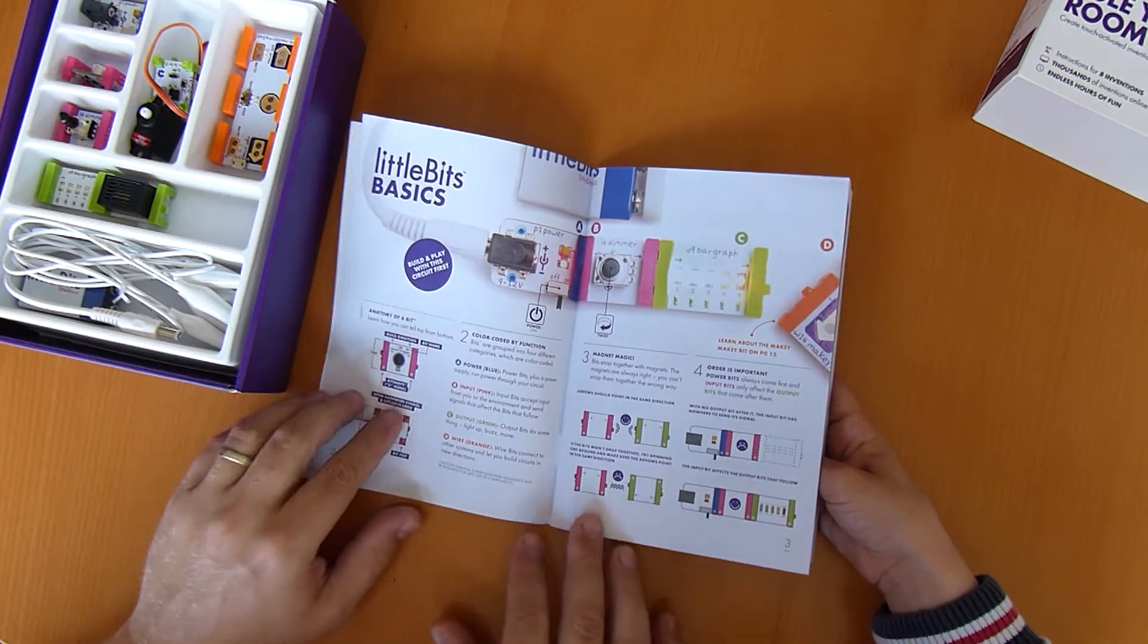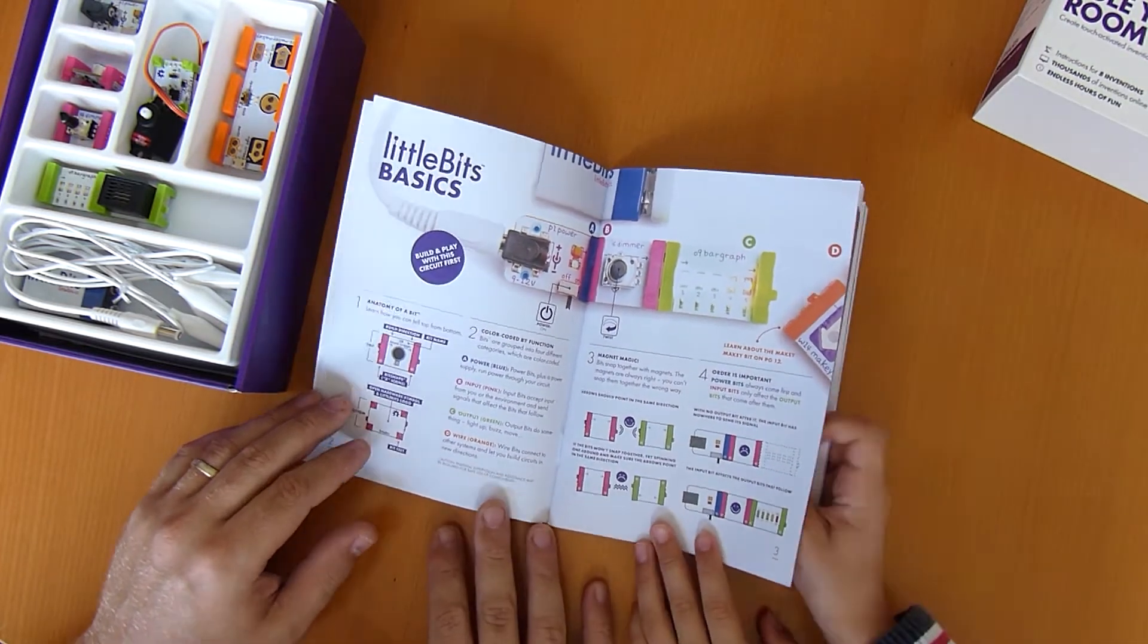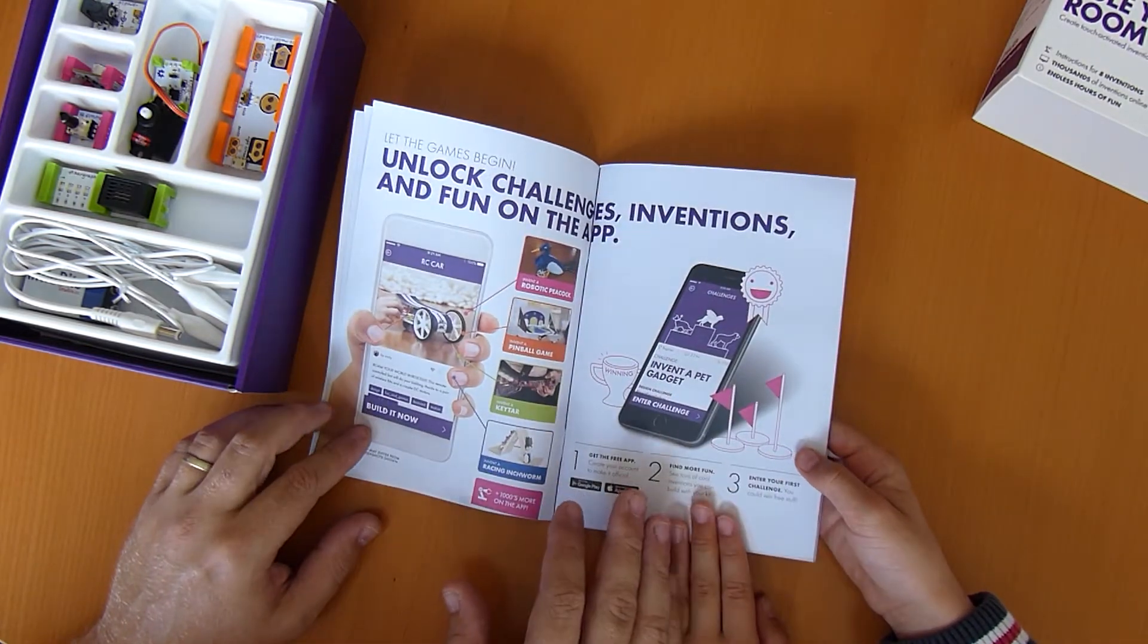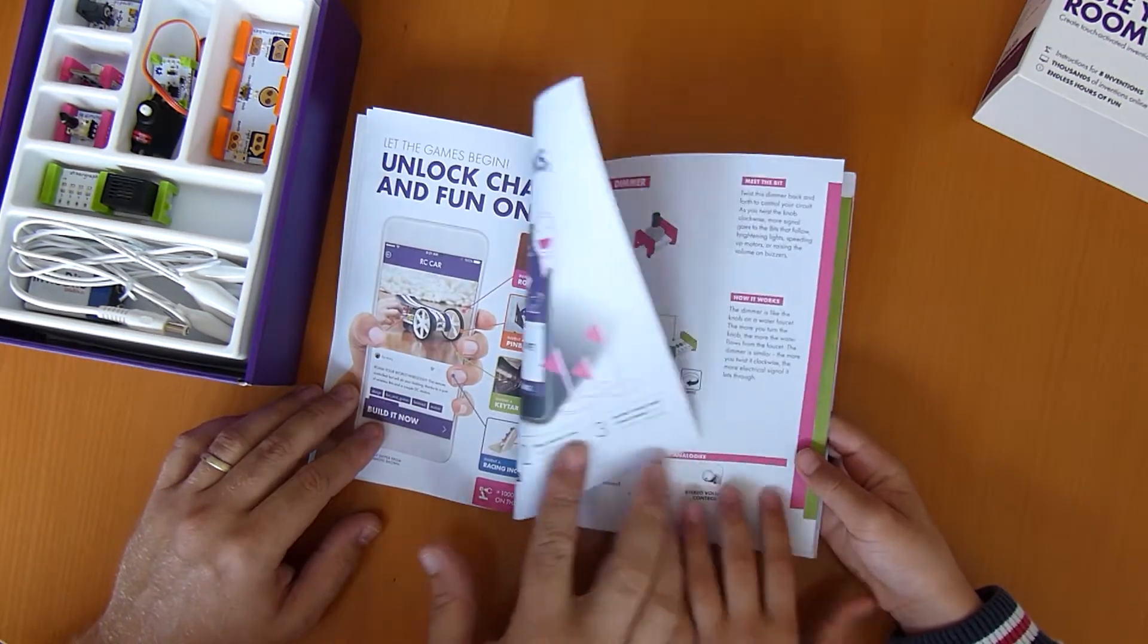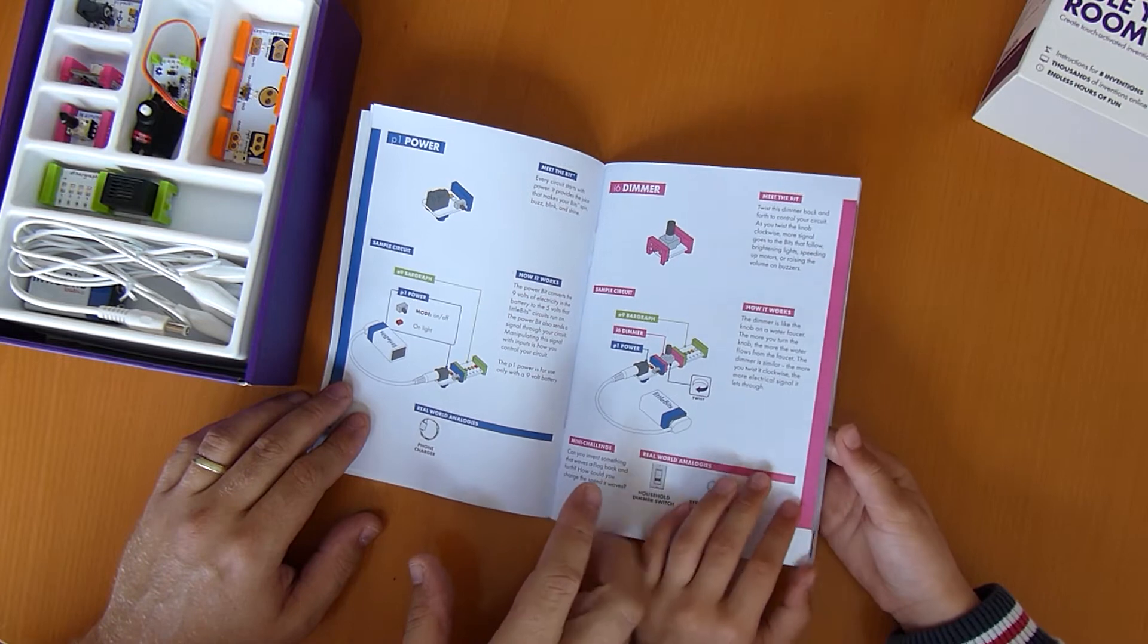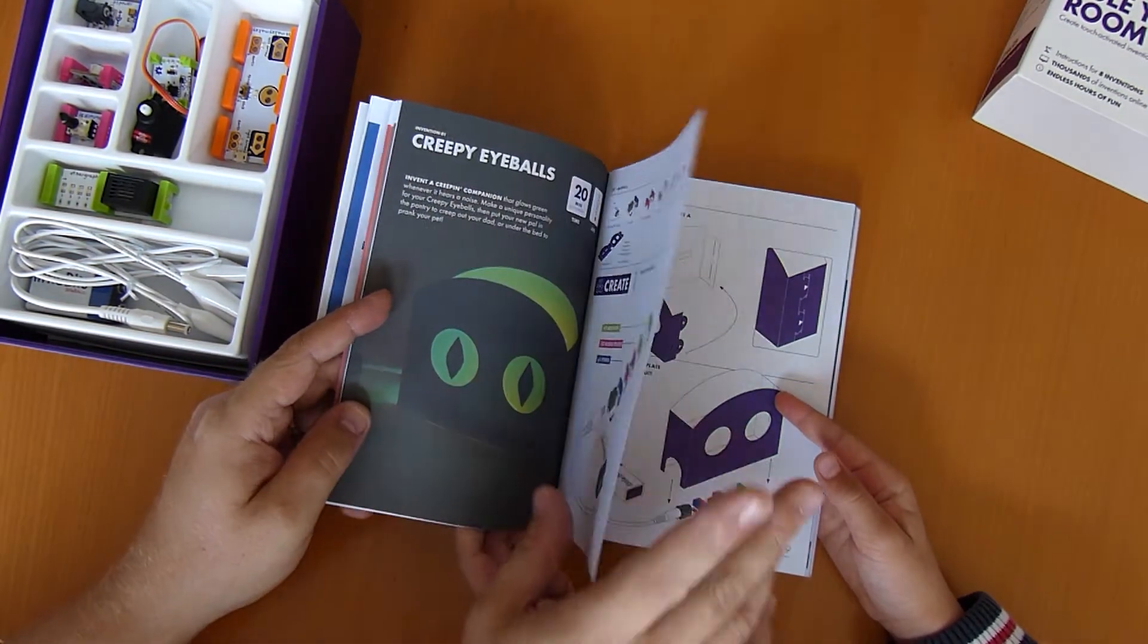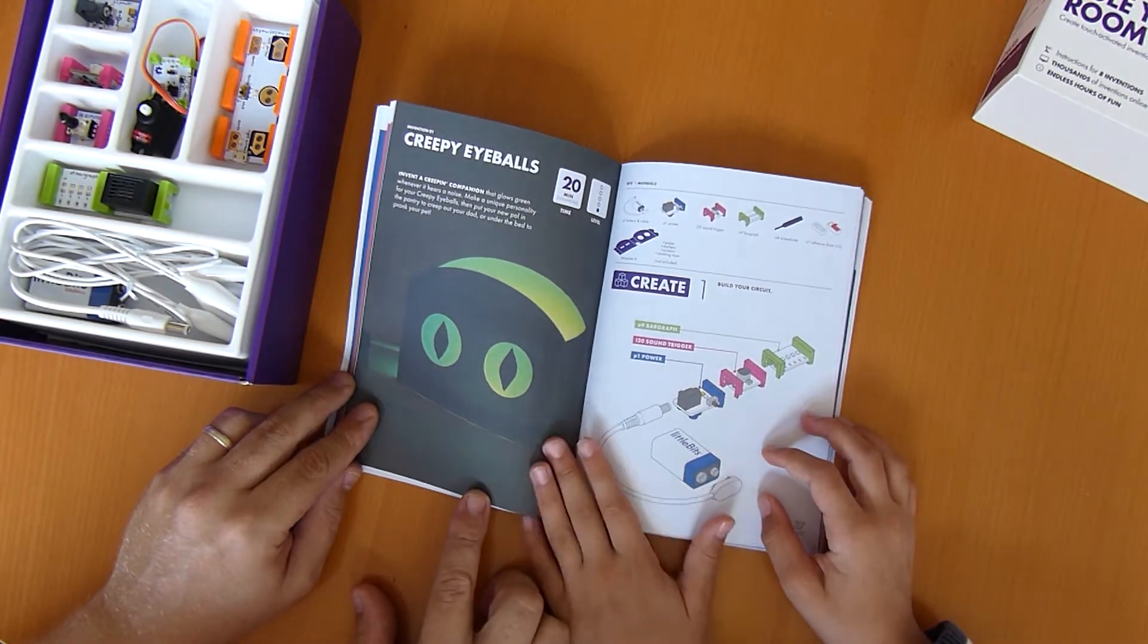Yeah, it's got the LittleBits Basics where it tells you what you can do. It tells you about the app, which we'll have a look at later. It tells you about all the little bits that come with it, but then the really more interesting bits is where you can start to make some kits. I think we're probably going to have a go at the Creepy Eyeballs kit.